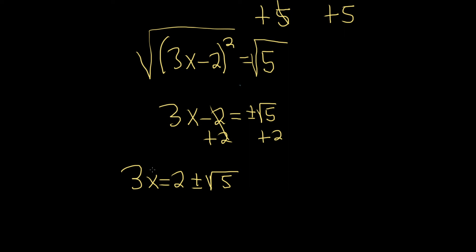To finish, we simply have to solve for x. So since it's being multiplied by 3, we'll just do the opposite or inverse operation, which is division. So we'll divide both sides by the number 3. And that leaves us with x equals 2 plus or minus the square root of 5, all divided by the number 3.